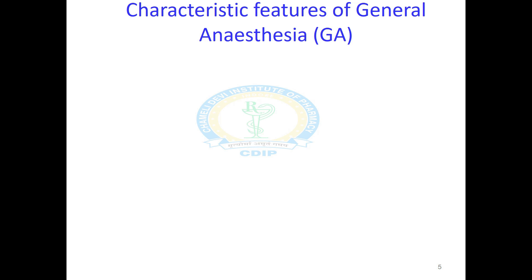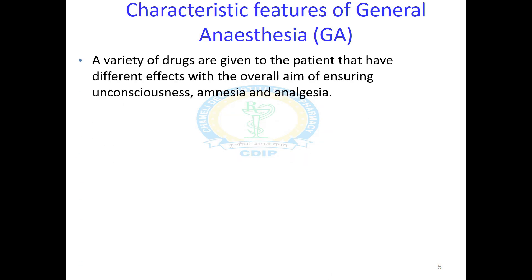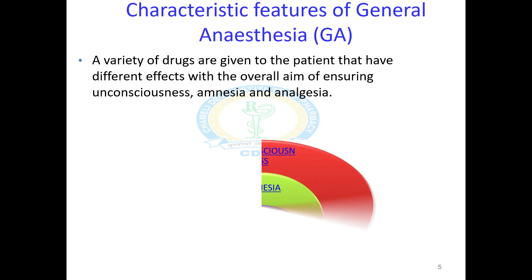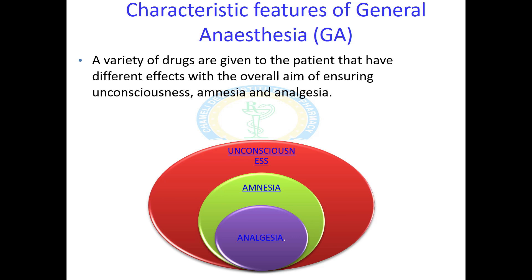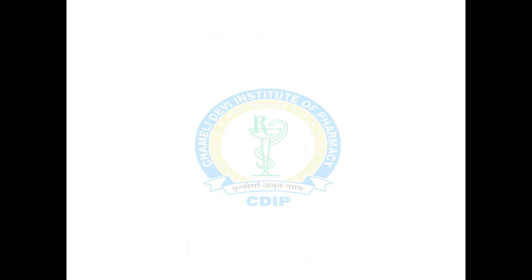The major characteristic features of general anaesthesia are three: analgesia, amnesia, and unconsciousness. Analgesia is the loss of pain sensation. Amnesia is short-term loss of memory, followed by the unconsciousness state.